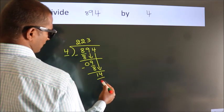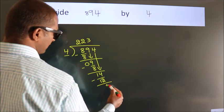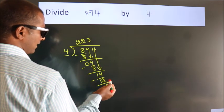4 times 3 is 12. Now we subtract. We get 2. After this, no more numbers to bring down.